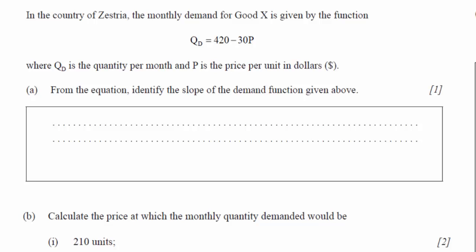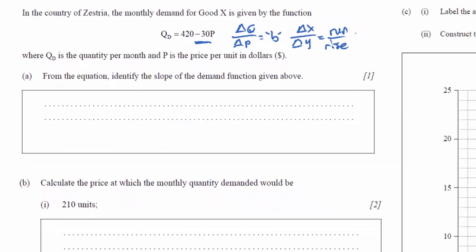From the equation, identify the slope of the demand function given above. Now remember from our earlier lessons that the slope is not as straightforward as identifying the b variable. Rather, the b variable is the change in quantity over the change in price, which is the same as saying the change in X over the change in Y or the run over the rise. The slope, on the other hand, refers to the rise over the run. So slope equals rise over run, which is change in Y over change in X.